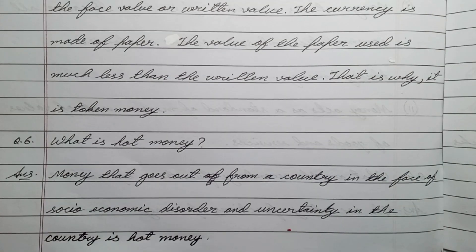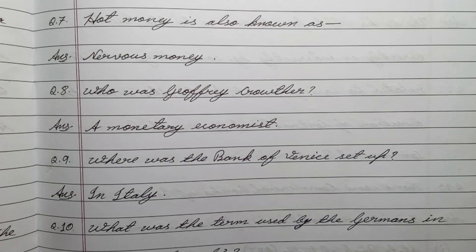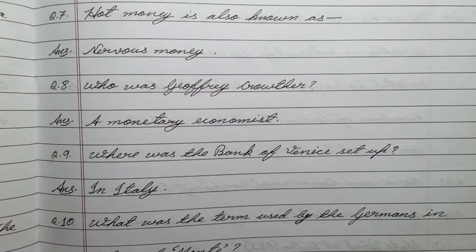Question number six: what is hot money? Answer: money that goes out from a country in the face of socio-economic disorder and uncertainty in the country is hot money. Question number seven: hot money is also known as? Answer: nervous money.